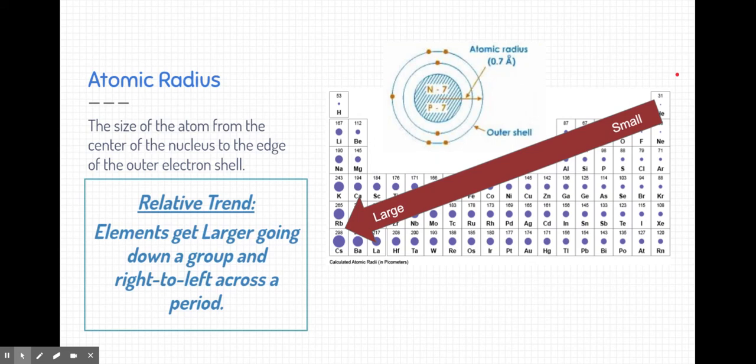Elements get larger as they're going down groups and from right to left across a period. Remember, groups are columns and periods are rows.